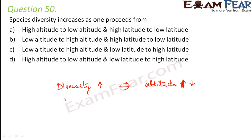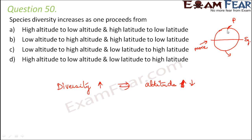Now regarding latitude: latitude is the distance from the equator to the pole. Near the equator there is more diversity, and as you move towards the poles the diversity reduces. So diversity gradually decreases as latitude increases. As you move towards the poles your latitude is increasing, so as latitude increases diversity decreases — meaning diversity increases as latitude decreases.